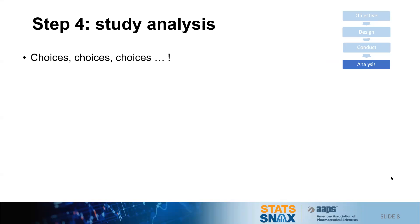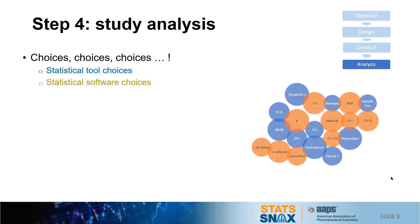So let's look at the last step, and if every other step has been done correctly, we have choices. In fact, we have choices among statistical tools such as bioassay analysis, t-tests, sample size determination, and regression. But we also have choices of statistical software such as Sigmaplot, Jump, and even Excel.